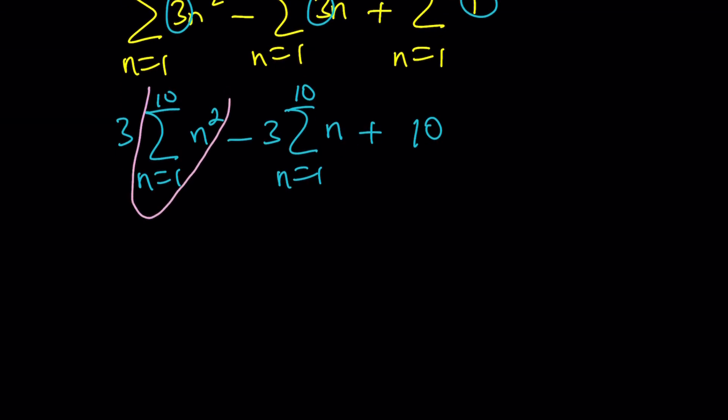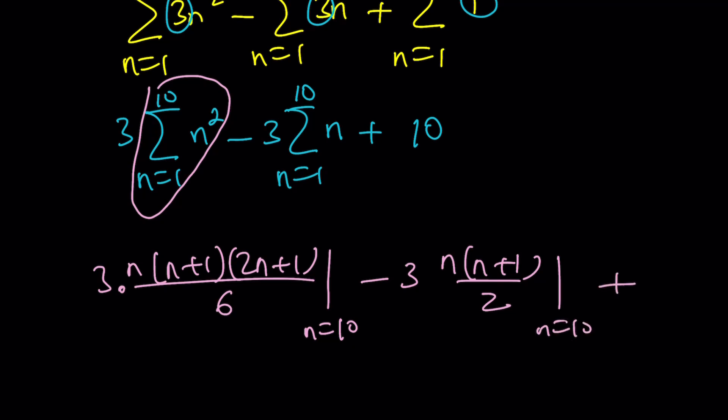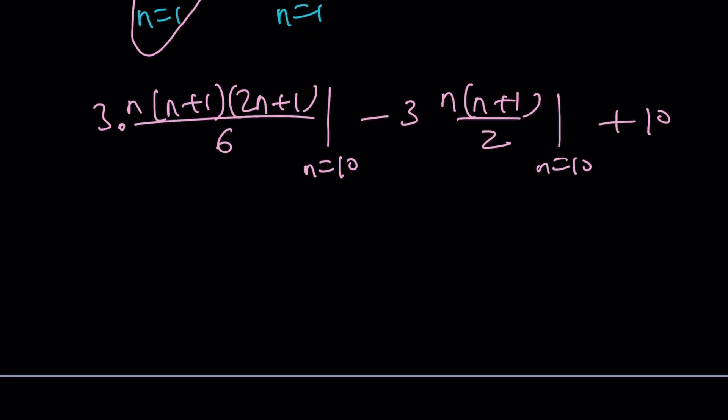So we have a formula for each one of these. For example, the sum of squares, the consecutive squares, is n times n plus 1 times 2n plus 1 divided by 6. But of course, you have to evaluate this at n equals 10. And then, same thing here, we have a formula, n times n plus 1 divided by 2 at n equals 10 plus 10. And then we're going to go ahead and plug it in, but let's simplify this a little bit. If we replace n with 10, you're going to get 10 times 11 times 21 divided by 2. Of course, this is going to simplify.